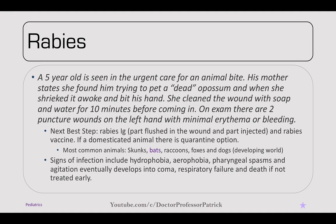Signs of rabies infection include hydrophobia, aerophobia, and pharyngeal spasms, which cause foaming of the mouth because the patient doesn't want to drink water or swallow sputum. It eventually develops into coma, respiratory failure, and death if not treated early with passive and active immunity.